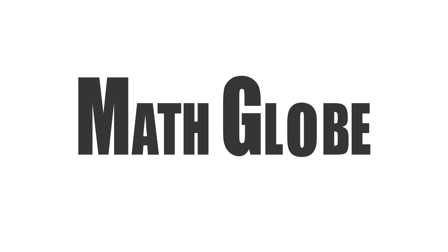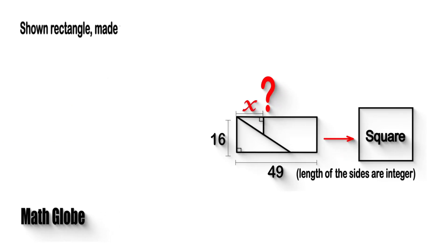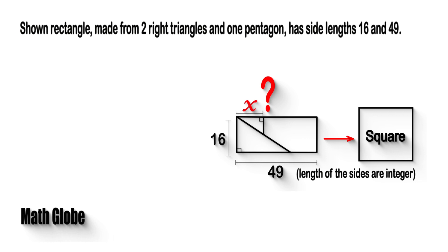Hi, this is mathglobe. Shown rectangle, made from two right triangles and one pentagon, has side lengths 16 and 49. If this rectangle can be transformed into one square, what will be the length of x?